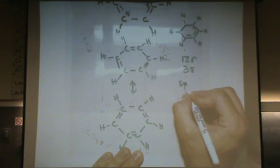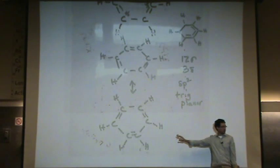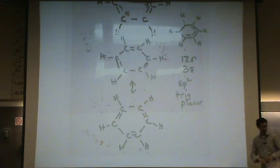What's the hybridization of every carbon? Every carbon is sp2. So what's the shape? Trigonal planar. Every carbon is trigonal planar. So this molecule is flat. Because trigonal planar is flat. And so the bond angles are 120 degrees.